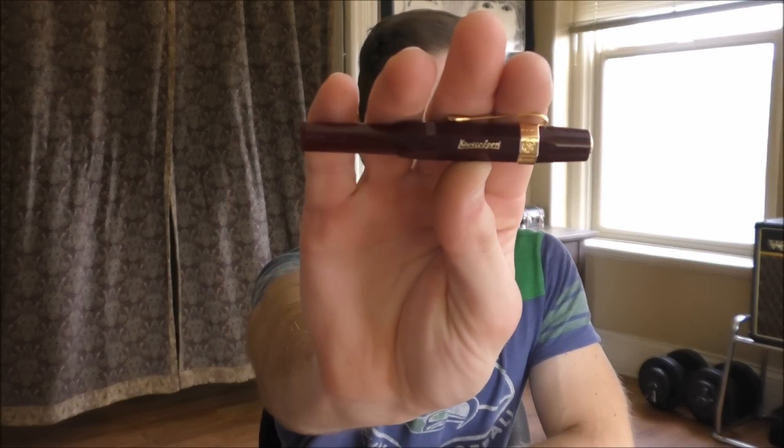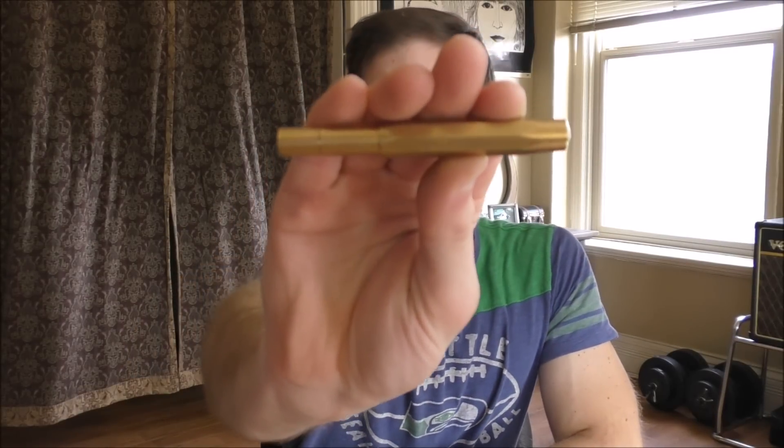Now several weeks ago I reviewed this, the Kaweco Classic Sport Fountain Pen. And when I gave this review I mentioned many of the other finishes, many of the other materials that you could get this pen in. There's brass, there's aluminum, there's even a carbon fiber version. Well today I'm going to be reviewing the brass version. This is the Kaweco Brass Sport Fountain Pen. And because I did just recently review the Classic Sport version, I'm not going to get quite as in-depth with this review, but I do want to point out some of the differences. And this pen is quite a bit more expensive than the Classic, so we'll talk about whether or not that increased price tag is warranted. So let's take a closer look.